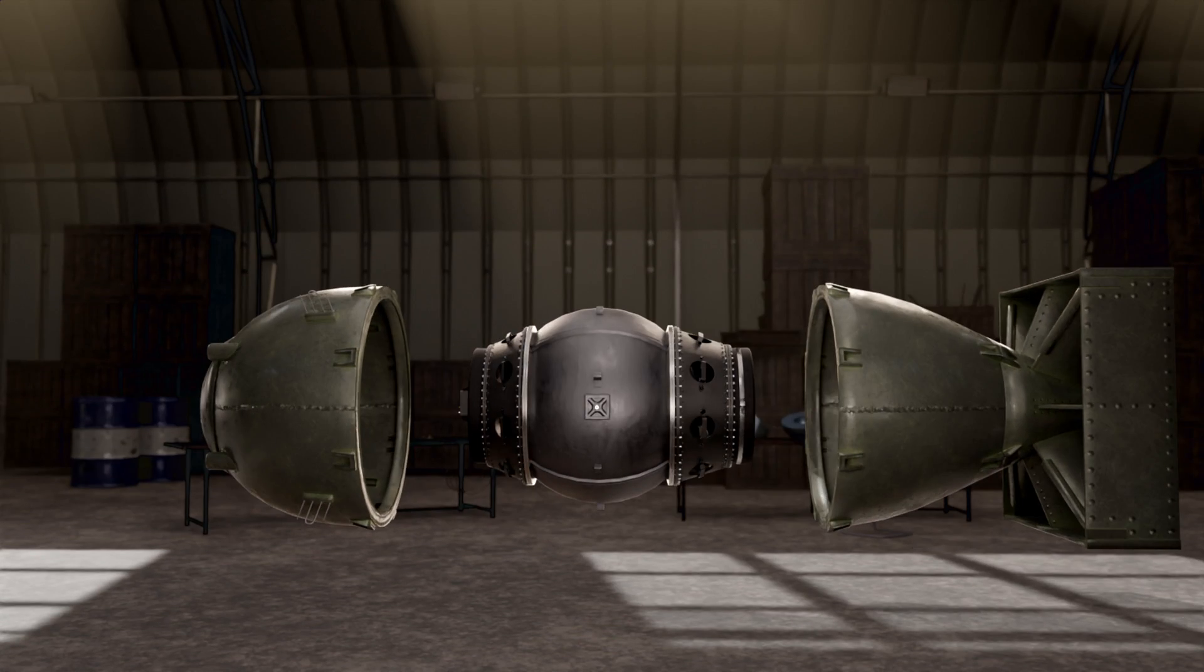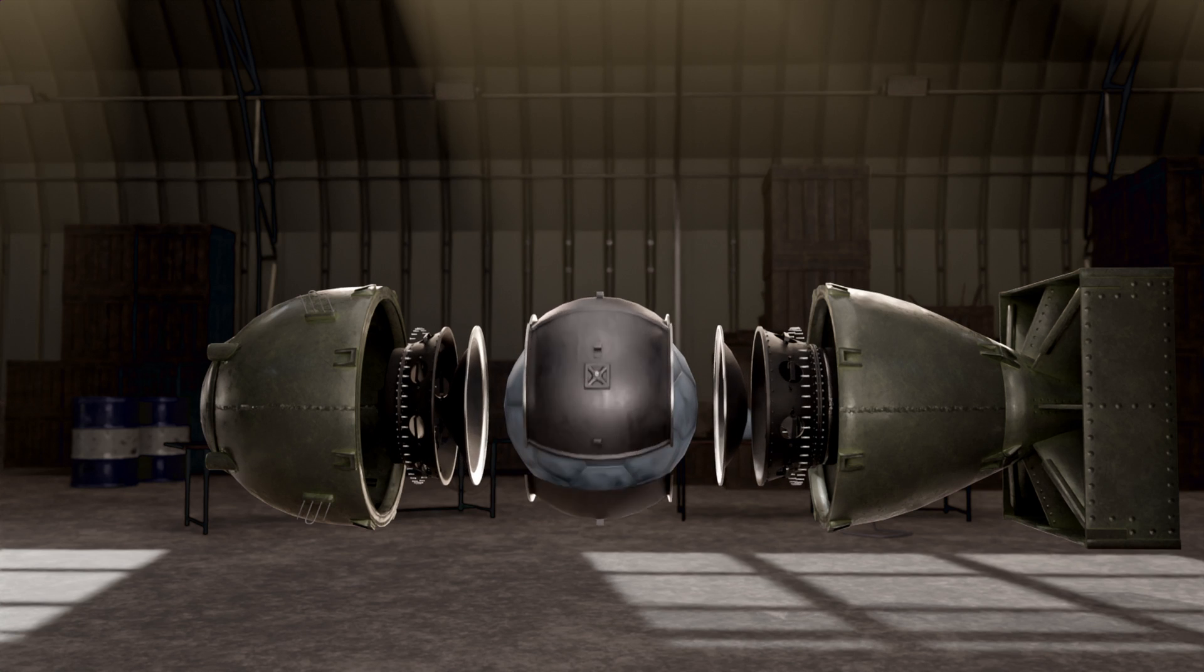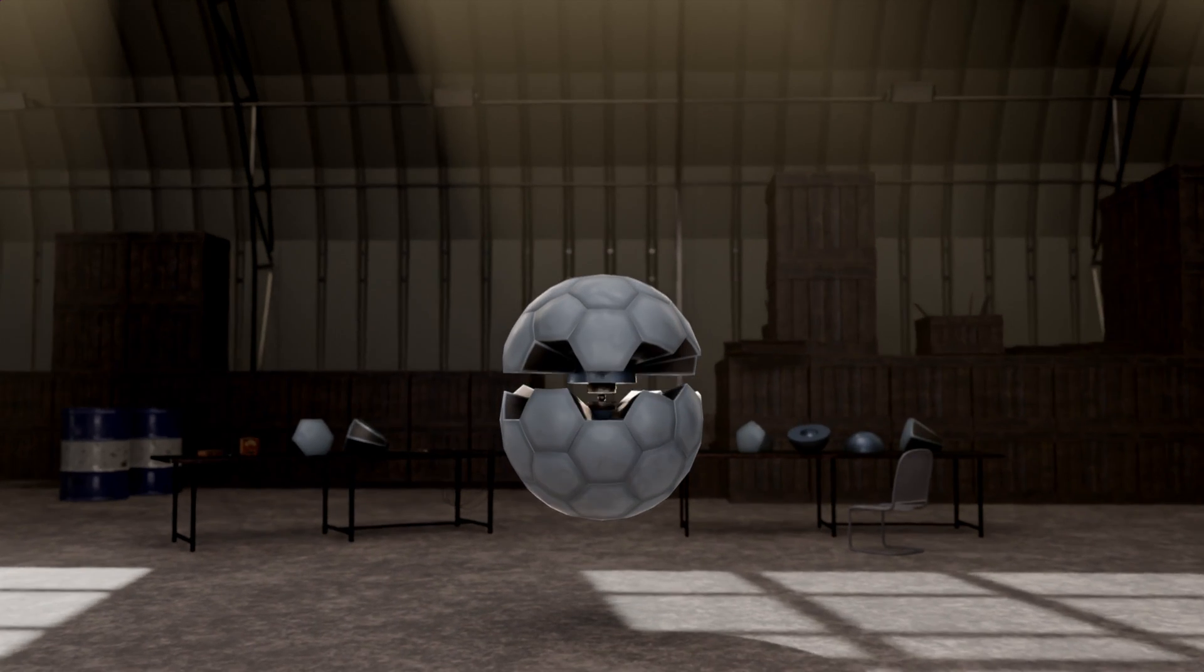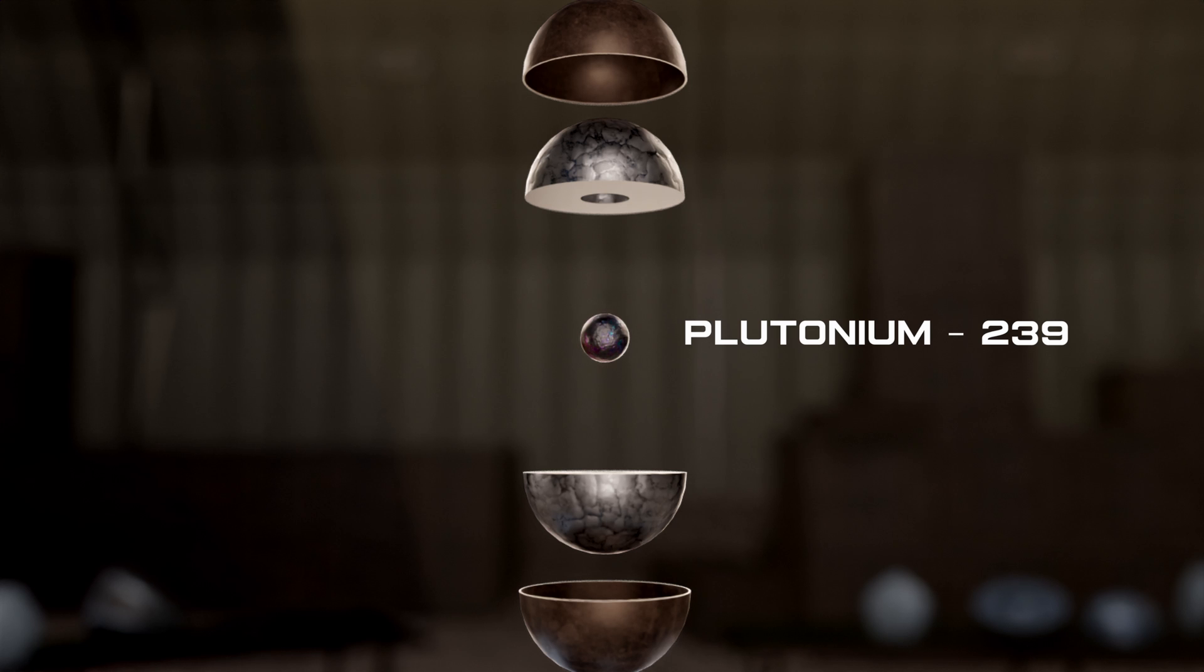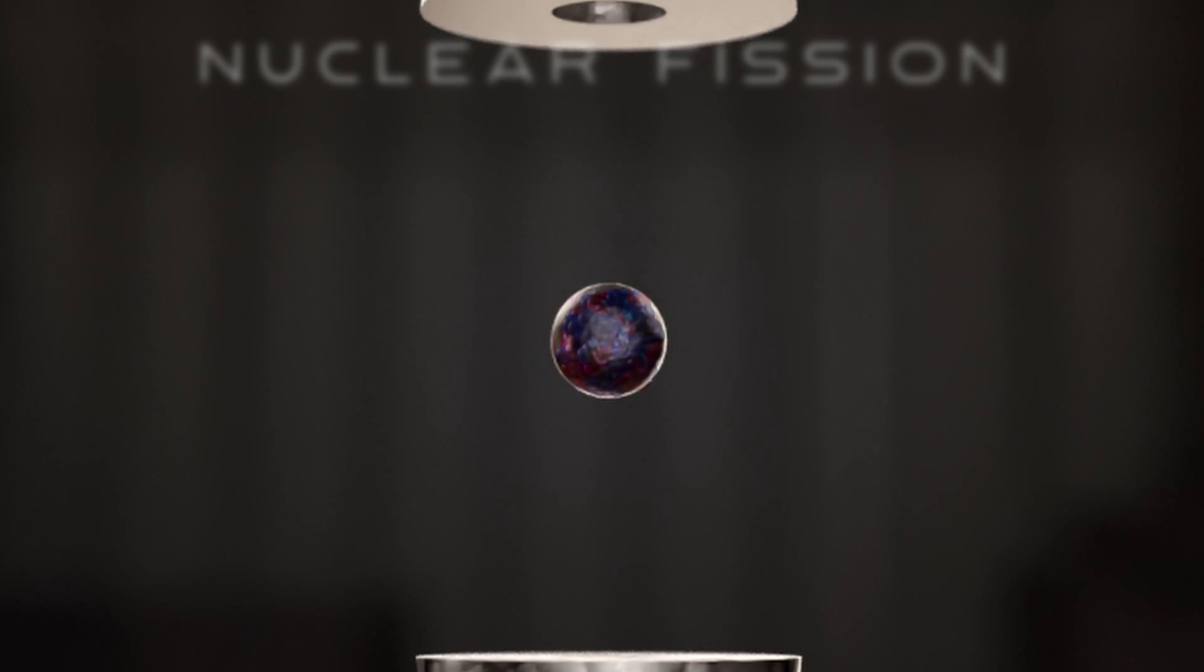There are two outer metal layers covering the main physics package. At the center of the physics package there is a plutonium-239 sphere. It is about 9.2 centimeters in diameter. This is the main material for a nuclear fission process.